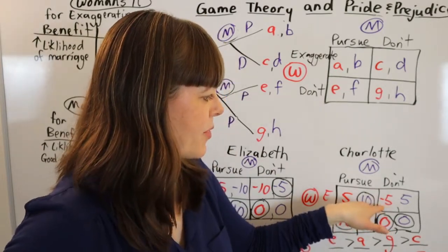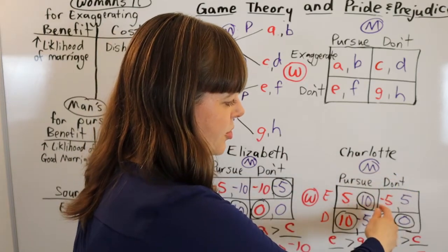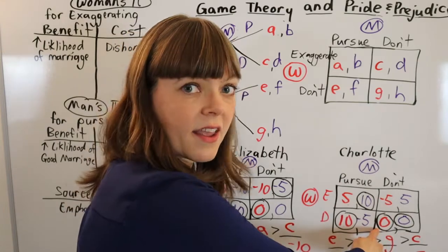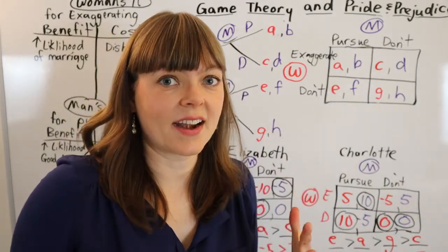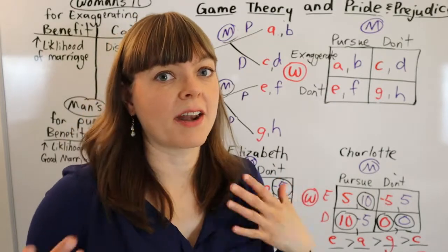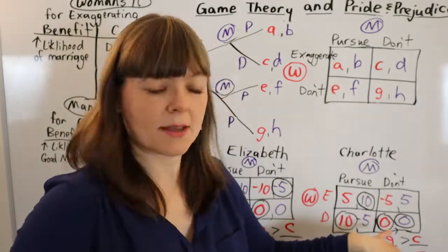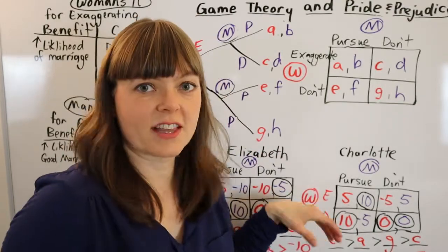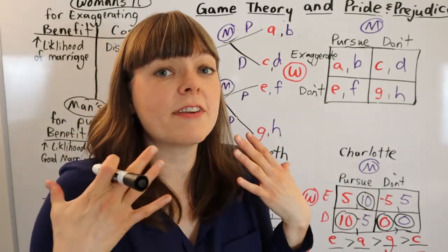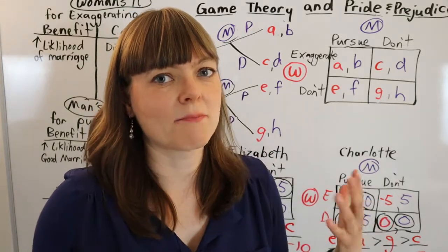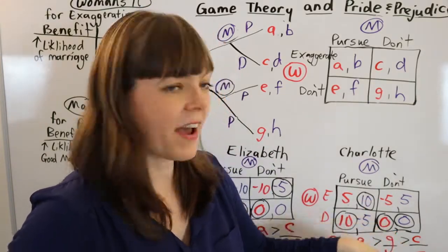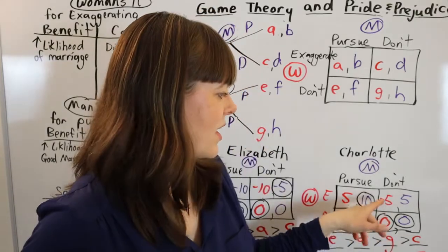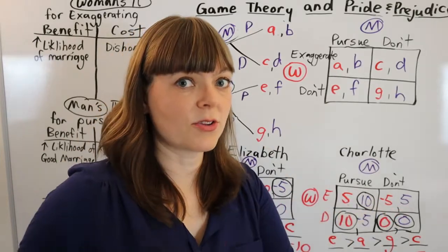And actually I can. As a matter of fact, this is one of Charlotte's main arguments is that if he ends up not pursuing her, she's going to regret not exaggerating. Like she will feel like, oh, what if he would have pursued if I would have exaggerated my interest. And so if I put regret over in that table or the possibility of regret, then we can get these payoffs to switch. Let me do that now.